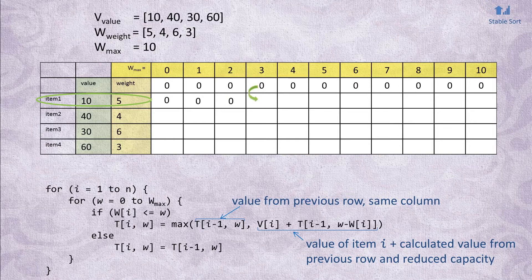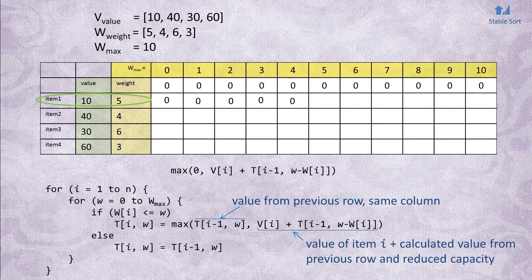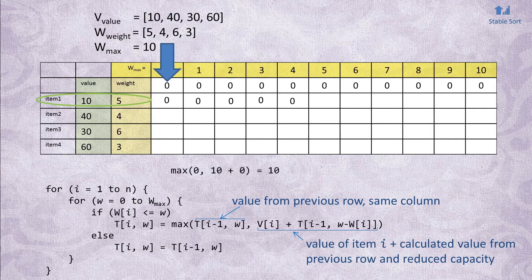But once the capacity is at least 5, we can fit this item. Thus, we evaluate the max statement. The value from the row above is 0, versus value of item 1, which is 10, plus the value from the row above shifted to the left by the used up capacity of the item. The value in that cell is 0 in this case. So we save off the total of 10.